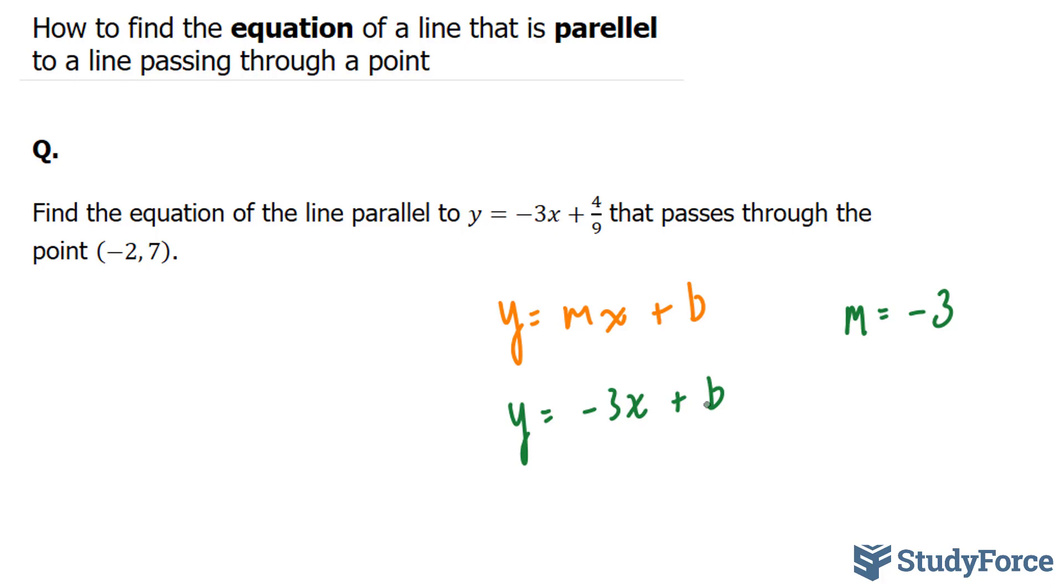The next thing that they tell us is that it passes through the point negative 2 and 7. This negative 2 represents your x, and this positive 7 represents your y. So in your next step, you will substitute this 7 and this negative 2 into y and x.